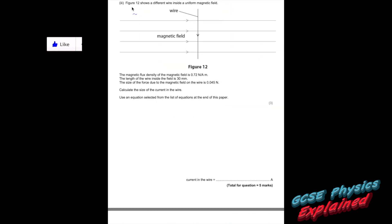Part three. Figure 12 shows a different wire inside a uniform magnetic field. The magnetic flux density of the magnetic field is 0.72, so that's B. The length of the wire inside the field is 30 millimeters. Let's convert that into meters by dividing by 1000 or just by sticking a times 10 to the minus 3 on the end. The size of the force due to the magnetic field on the wire is 0.045 newtons.